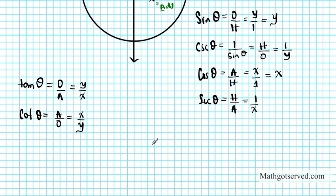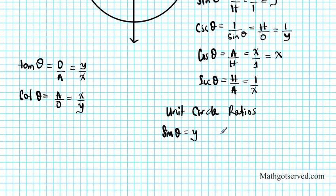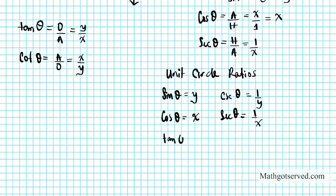Let's organize all the unit circle ratios together. Sine theta equals y; its reciprocal, cosecant theta, equals 1 over y. Cosine theta equals x; its reciprocal, secant theta, equals 1 over x. Tangent theta equals y over x; its reciprocal, cotangent theta, equals x over y.